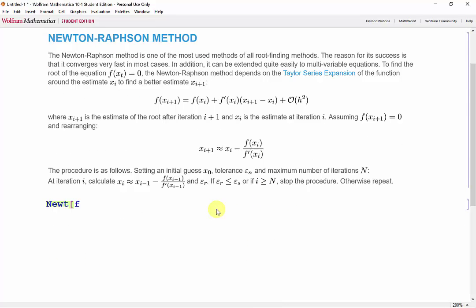So we need to input a function. And the Newton-Raphson method requires an initial guess x0, maximum number of iterations, and a stopping error.